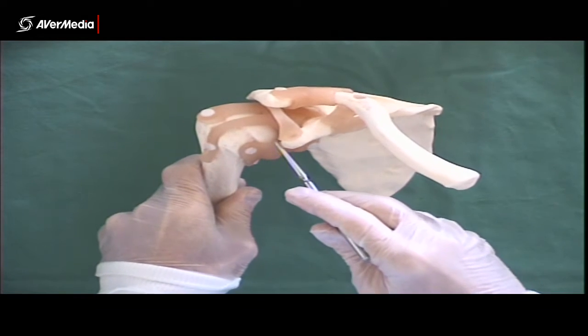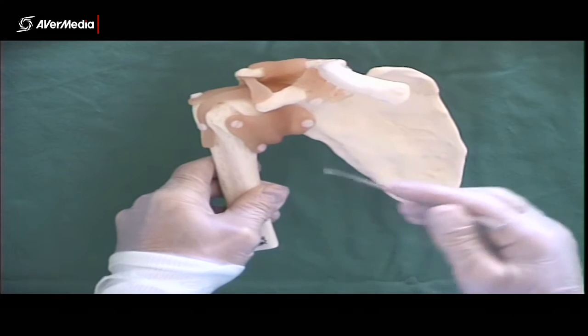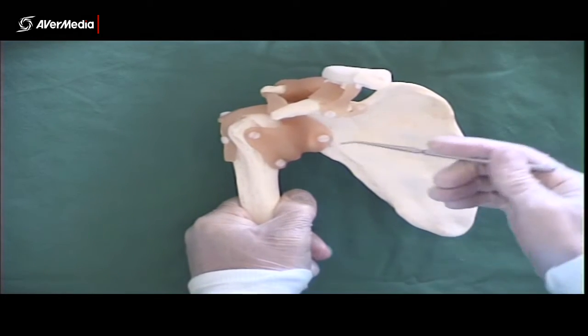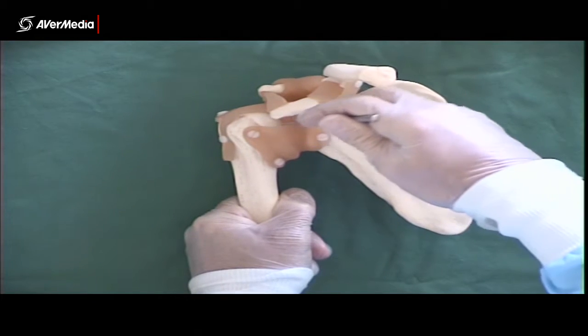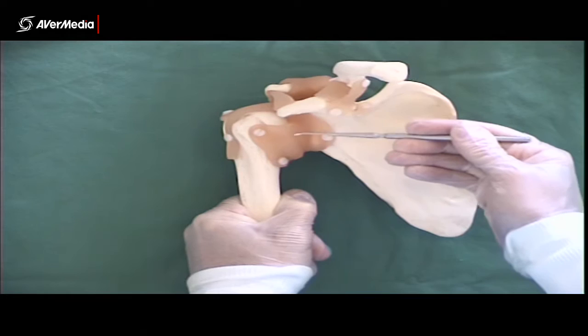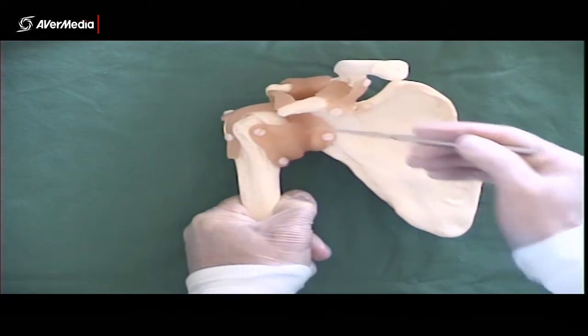Now on the interior aspect of the capsule, just here on the anterior surface, that's where the glenohumeral ligaments are, but they're not visible on this model. They're on the inside of the joint capsule, so we can't actually see the glenohumeral ligaments here, but they would be just under the surface of the capsule just here.